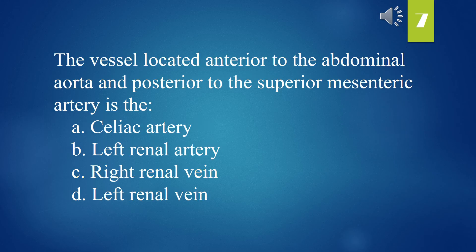The vessel located anterior to the abdominal aorta and posterior to the superior mesenteric artery is: A. Celiac artery. B. Left renal artery. C. Right renal vein. D. Left renal vein. The answer is D. Left renal vein.